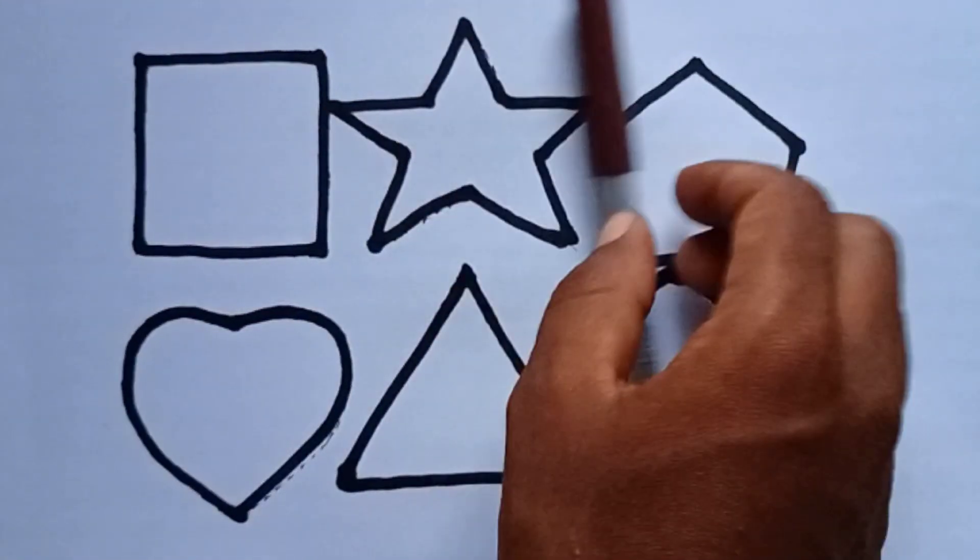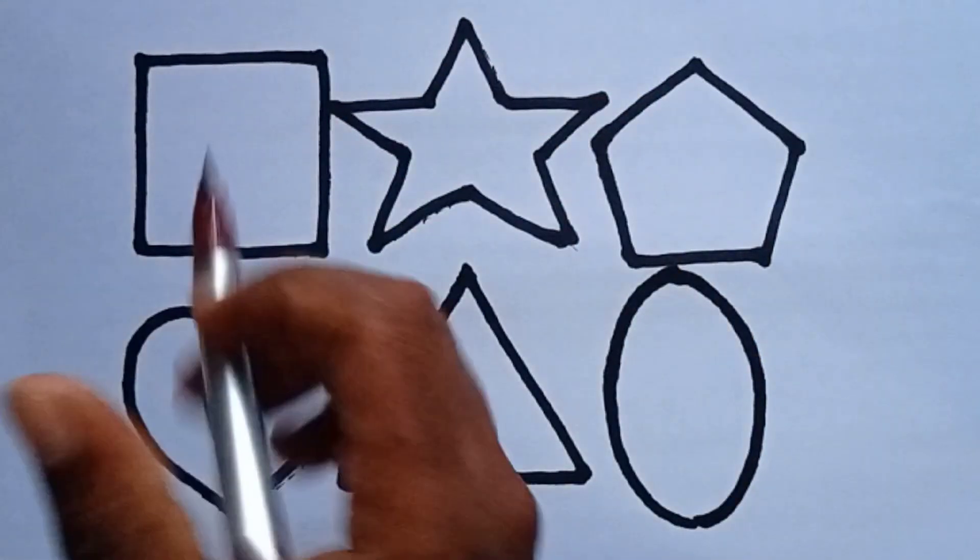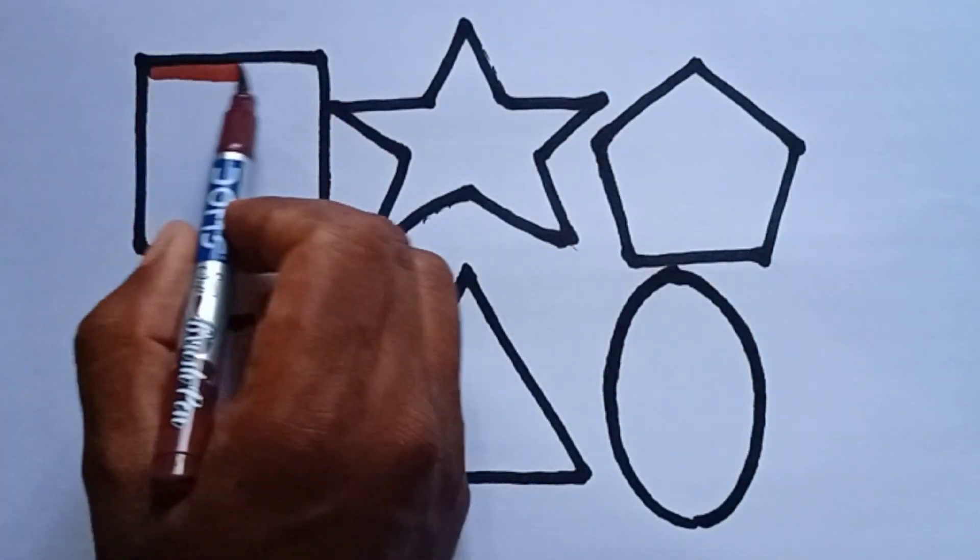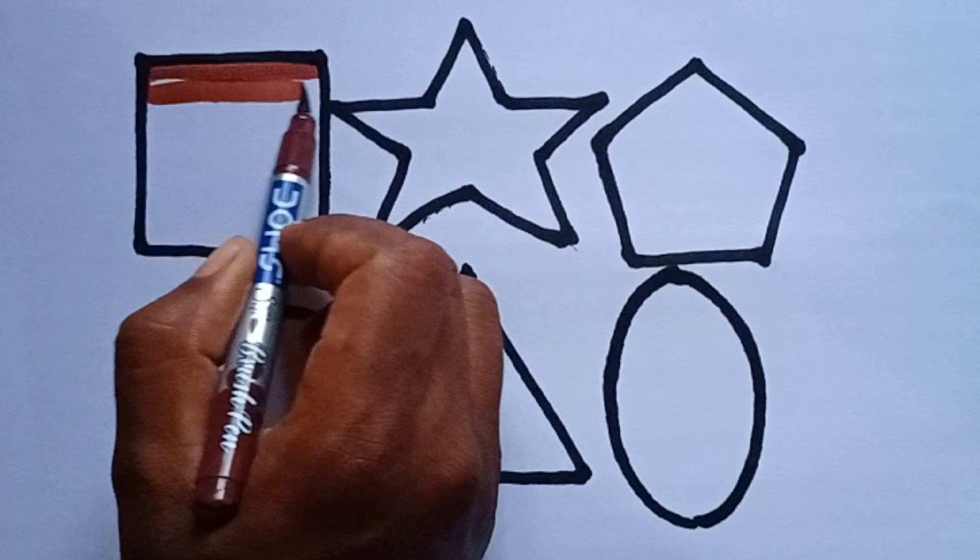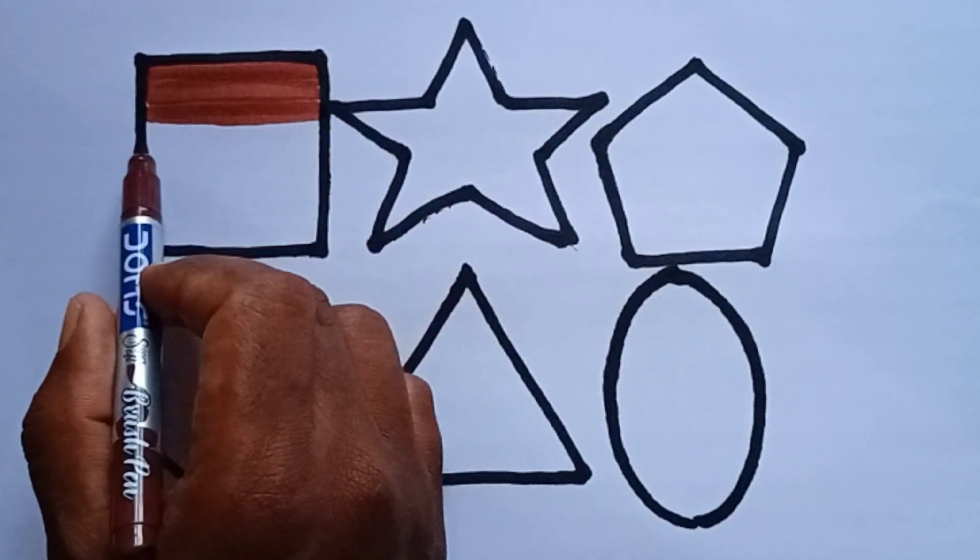Finish. Let's color 2D shapes. This is brown color. I am coloring square. Wow, this is brown color. I am coloring square.